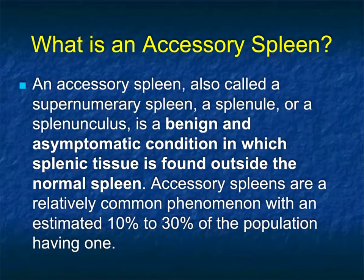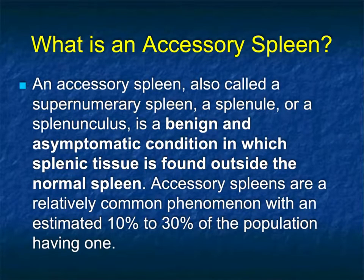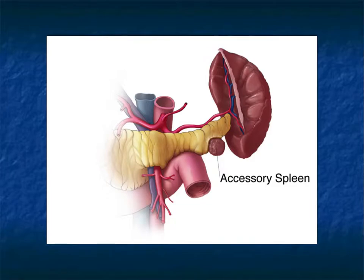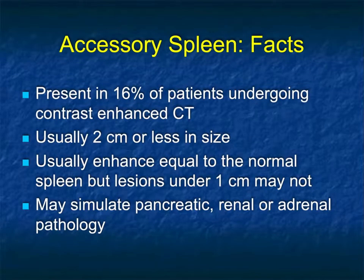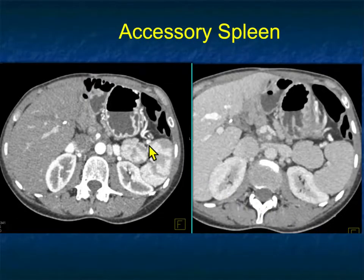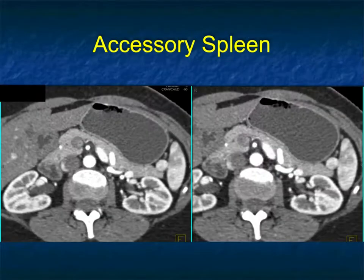Accessory spleens are found in 10 to 30% of the population. Since the accessory spleen enhances, it can look like a pancreatic mass — that's often one of the challenges. Accessory spleens typically enhance like normal splenic tissue and are usually 2 cm or less, enhancing similarly on both arterial and venous phase imaging, but can simulate pancreatic, renal, or adrenal pathology. Here's a nice example of a large accessory spleen near the splenic hilum — look at its moray pattern, just like the native spleen. On venous phase, it washes out as does the spleen — a very classic accessory spleen in the splenic hilum.